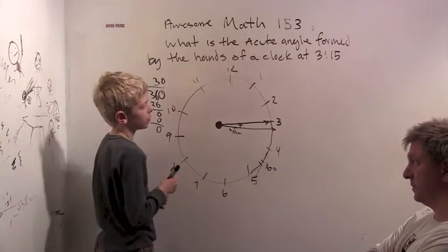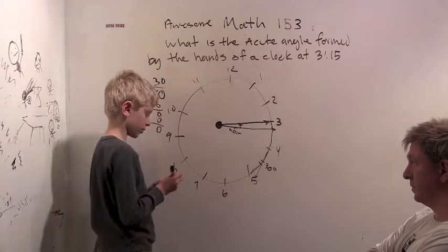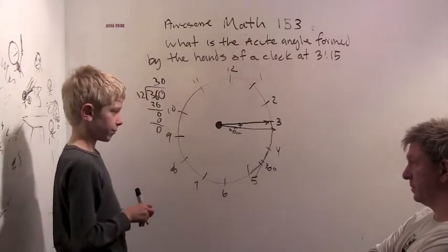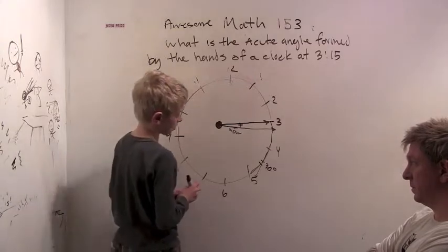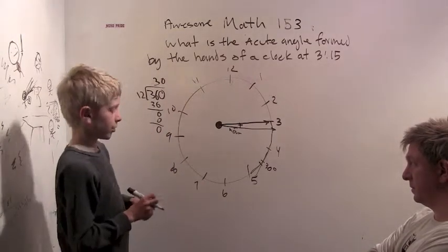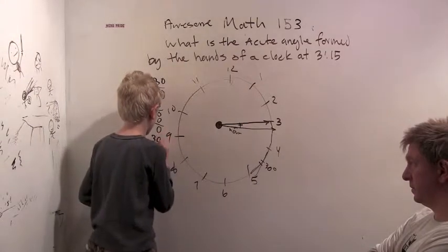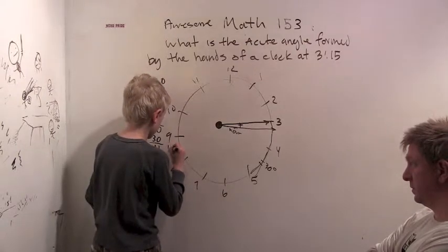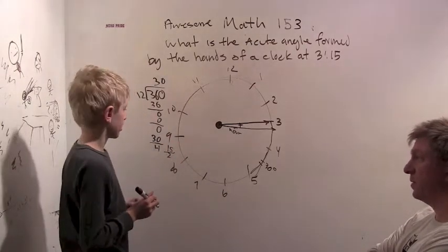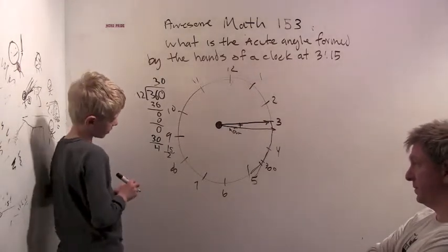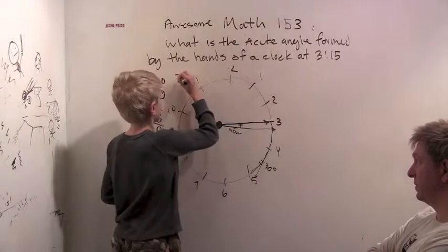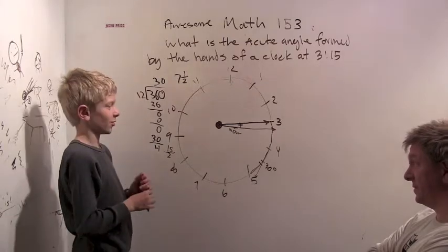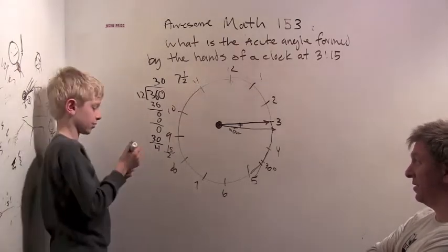So each of these is a 30 degree angle. Alright. And 30 divided by 4... we need to divide 30 by 4. 15 halves. And what is 15 halves as a mixed number? 15 halves is 7 and 1 half. So how many degrees are in that angle? 7 and 1 half degrees. Wow. Pretty small angle.